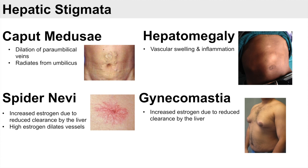High estrogen also leads to another stigmata: gynecomastia, which is enlarged breast tissue in males, again due to reduced estrogen clearance by the liver. It's worth noting that gynecomastia is not exclusively due to liver disease — it can result from other hormonal issues or increased peripheral estrogen production — but it is a recognized stigmata of liver disease. That was the lesson on hepatic stigmata; I hope you found this video helpful.